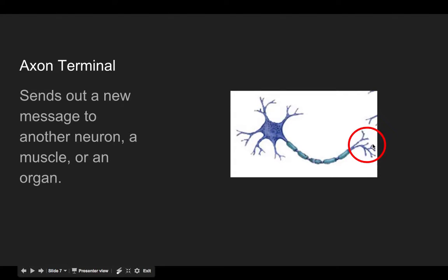Then you've got the axon terminal, and this will send out a new message either to another neuron, which you can see the dendrites of it here, or to a muscle to say, hey, contract, we have to move this limb, or to an organ to say, hey, we need you to create more insulin, pancreas, or heart, we need you to beat faster, things like that.